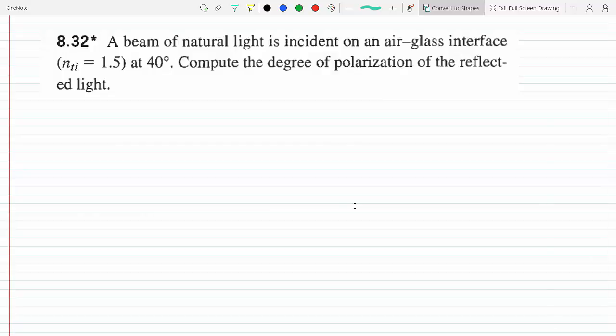We need to find the degree of polarization of the reflected ray. First, n₂/n₁ equals 1.5, and the beam of light is incident at 40 degrees, so θᵢ equals 40 degrees.